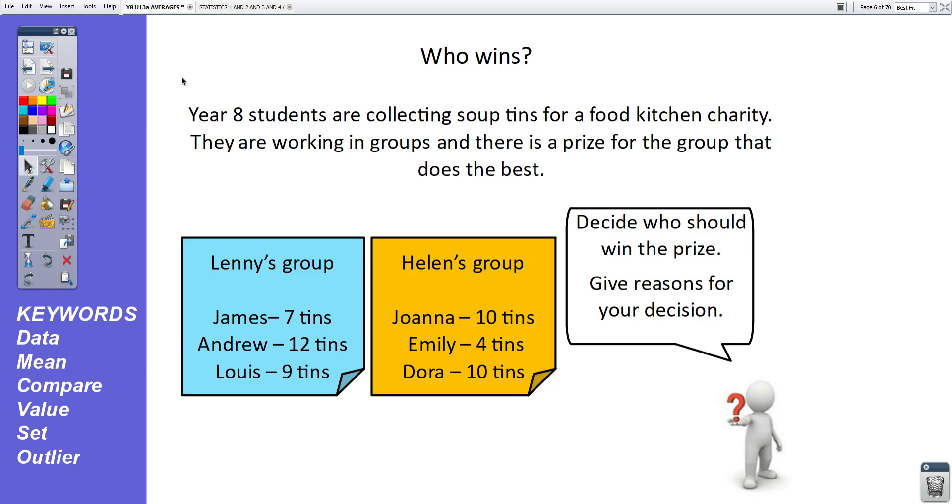So first of all, let's look at this problem. Year 8 students are collecting soup tins for a food kitchen charity. They are working in groups and there is a prize for the group that does the best. Lenny's group consists of James, Andrew and Louis. James collects seven tins, Andrew 12 and Louis 9. In Helen's group, there are Joanna, Emily and Dora. Joanna and Dora both collect 10 tins. Emily collects four tins. Decide who should win the prize and give reasons for your decision.